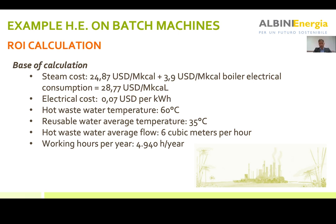You must consider that in this situation, the boiler was used to warm up the temperature of the thermal oil, and the thermal oil was the fluid designed to warm the temperature of the water in the washing machine. So if you use thermal oil, you must consider also the power of the pumps and the power of all the auxiliary equipment you need to treat the exhaust of the boilers. We made the calculation according to the real consumption and arrived at 3.9 US dollars per megacalorie for those items.